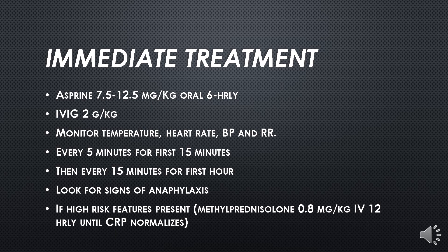Immediate treatment is important to start early to prevent coronary artery aneurysm. Treatment includes aspirin 7.5 to 12.5 mg/kg orally six-hourly, and intravenous immunoglobulin 2 g/kg as soon as possible. Once IVIG is started, monitor the child's temperature, heart rate, blood pressure, and respiratory rate — every 5 minutes for the first 15 minutes, then every 15 minutes for the first hour.